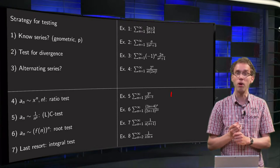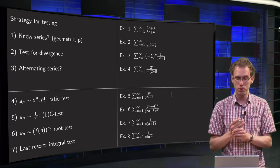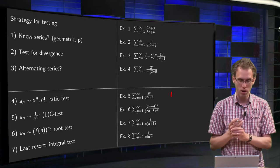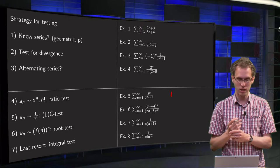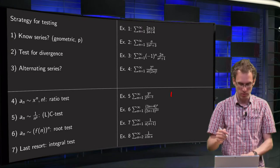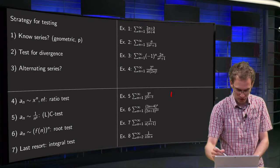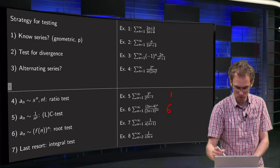Next one, oh there we have a lot of rubbish to the power n, definitely not known. Test for divergence will be kind of difficult, not alternating, but you see some function to the power n, so that will be a 6 the root test.